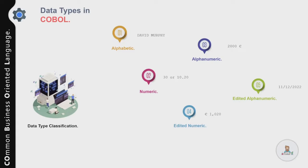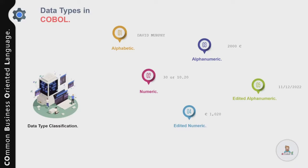The last two examples show reformatted data in a more readable format. For edited numeric, salary is displayed with a currency symbol and comma to be more presentable on a report or screen. For edited alphanumeric, a date is reformatted with forward slashes — showing day, then month, then year.